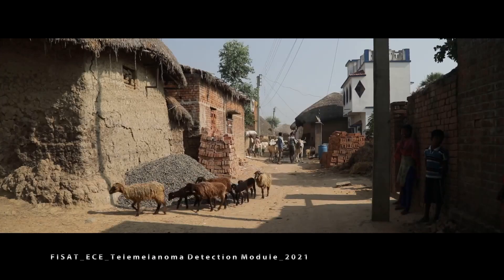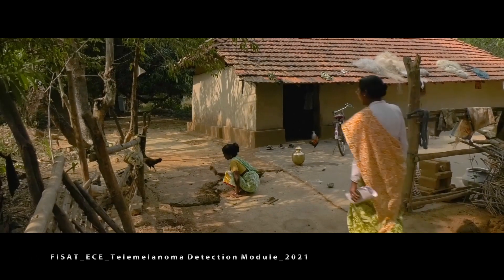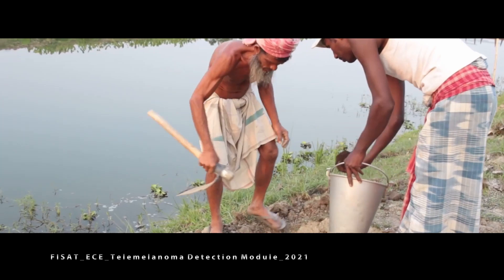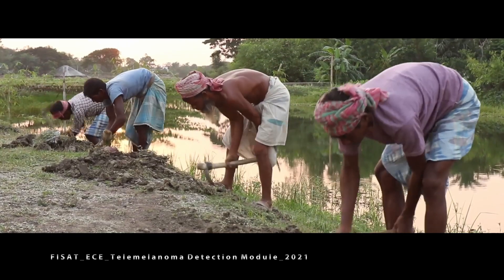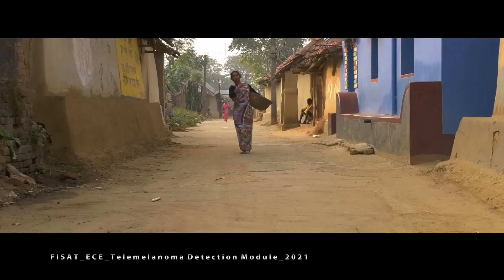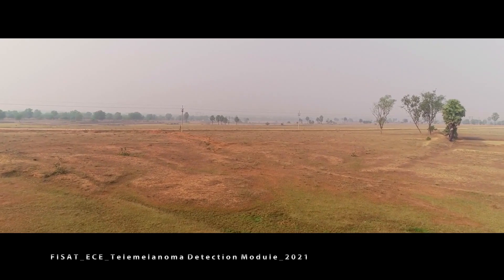Rural areas are those that do not have modern facilities and their population is much lower than in cities. In rural communities, agriculture is the major occupation. Major livelihood activities include cultivation of food and cash crops, fish farming, cattle rearing, and dairy farming, so people have to work under the sun for long hours.